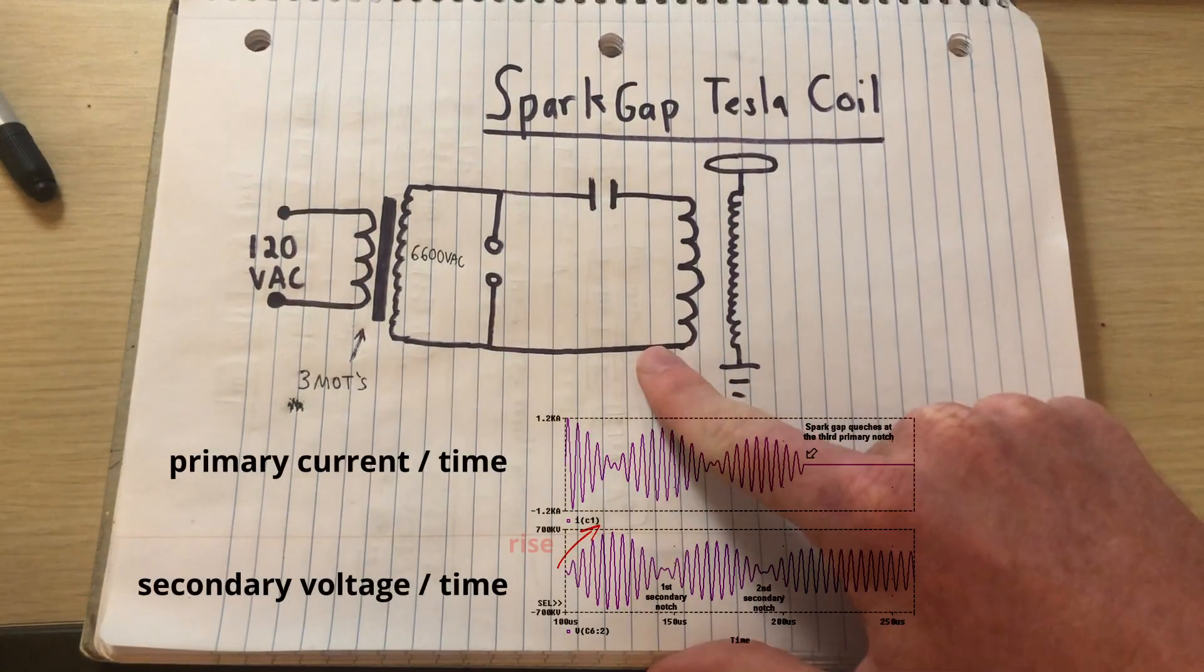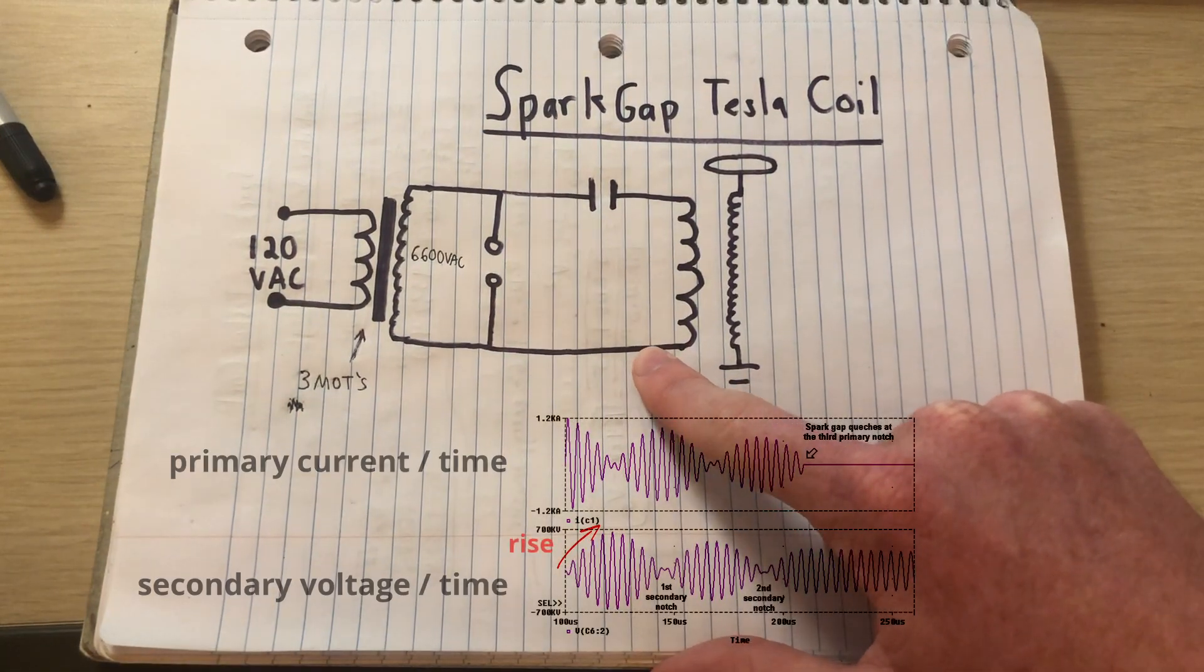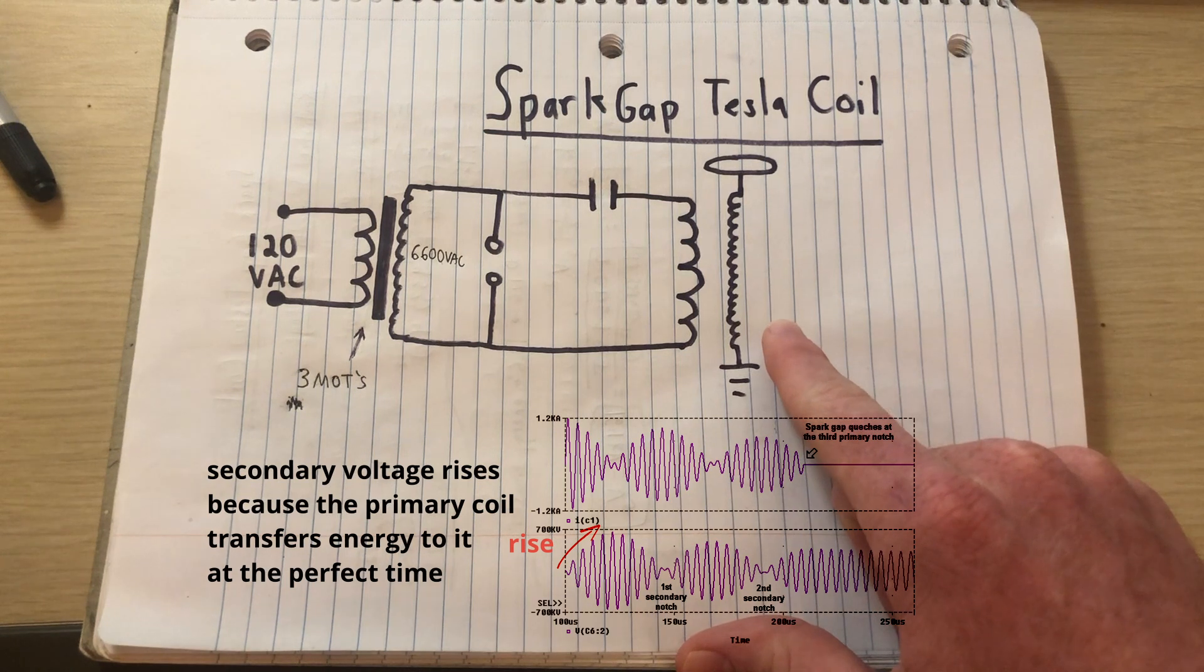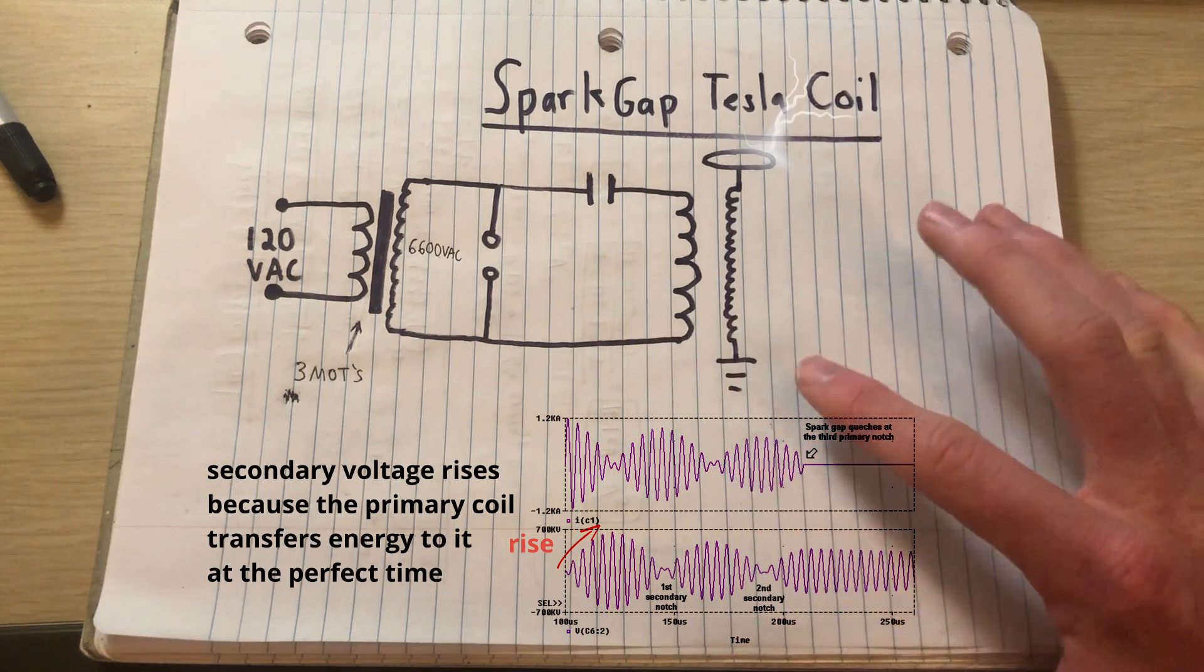If the primary coil's resonant frequency matches the secondary coil's resonant frequency, what you'll get is resonant voltage rise.